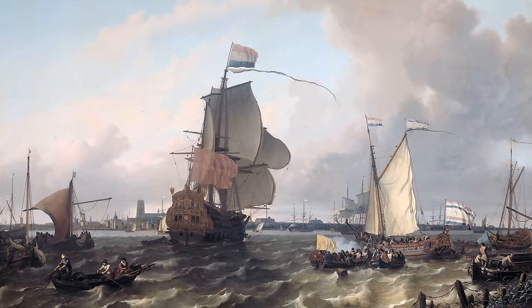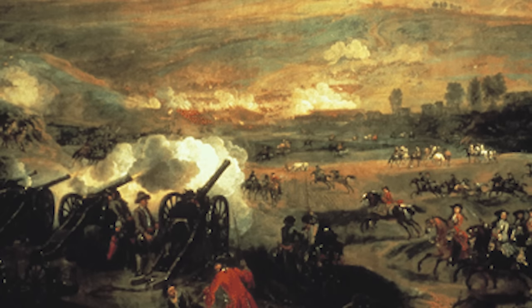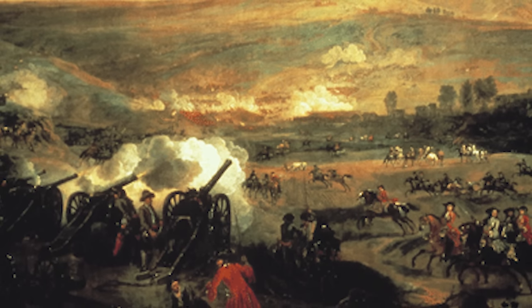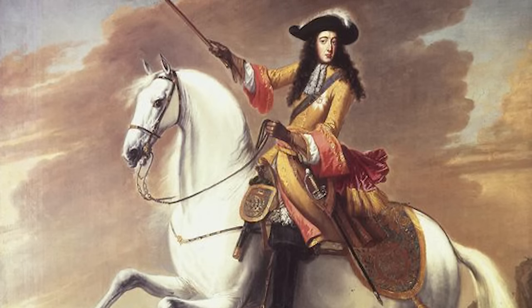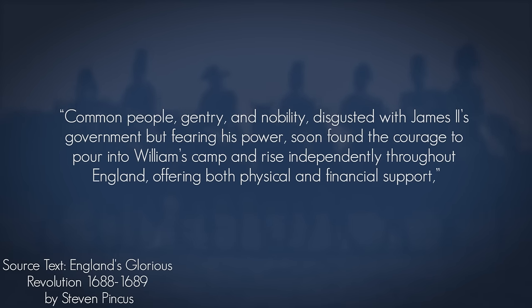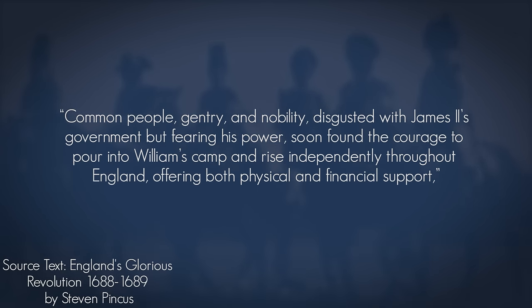I mention the second line of reasoning because, though mixed in with the religious concerns, their complaints about the king threatening the legislative body prove important to our exploration. William saw the letter and agreed. What was astounding about his 1688 invasion was the lack of violence. Resistance would come from the Scottish and Irish in the following years, but during the initial march, William and his 25,000 men quickly gained support on their way to London. As Professor Steven Pincus describes in his brief history of the Glorious Revolution, common people, gentry, and nobility, disgusted with James II's government but fearing his power, soon found the courage to pour into William's camp and rise independently throughout England, offering both physical and financial support.